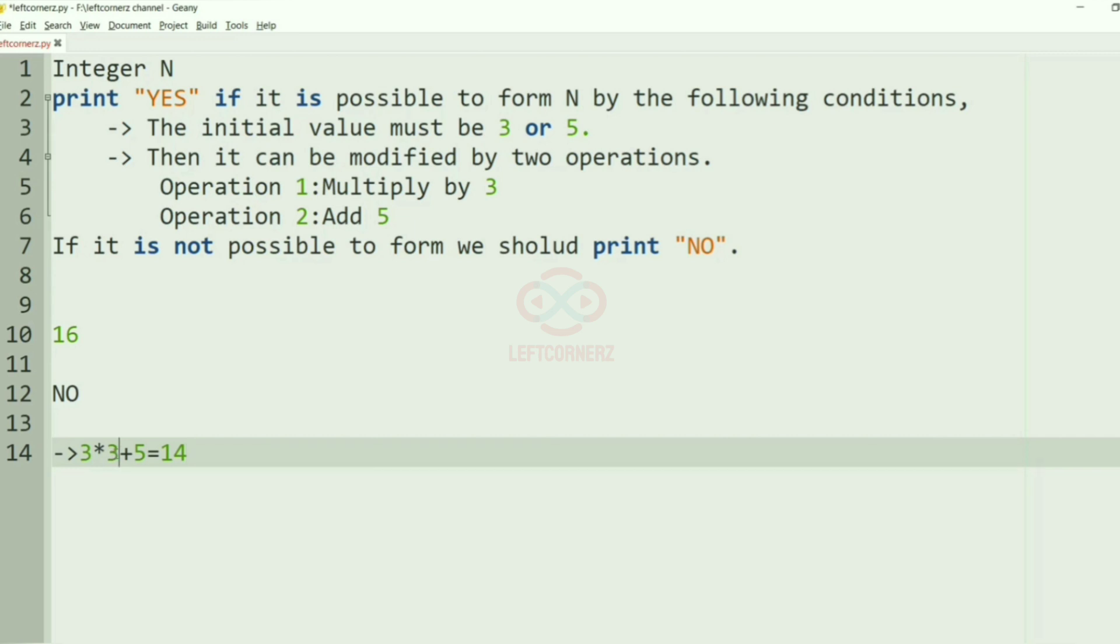And then if we multiply by 3 or if we add 5 to it, we'll get values greater than 16, so we'll print NO as the output.